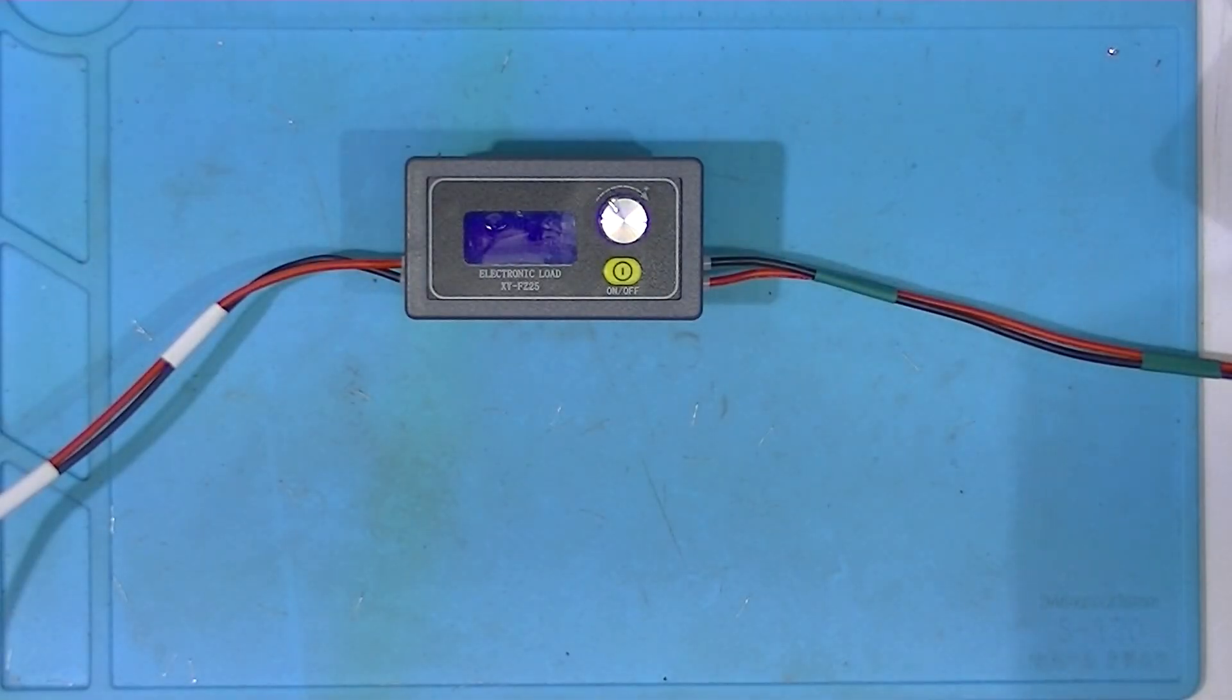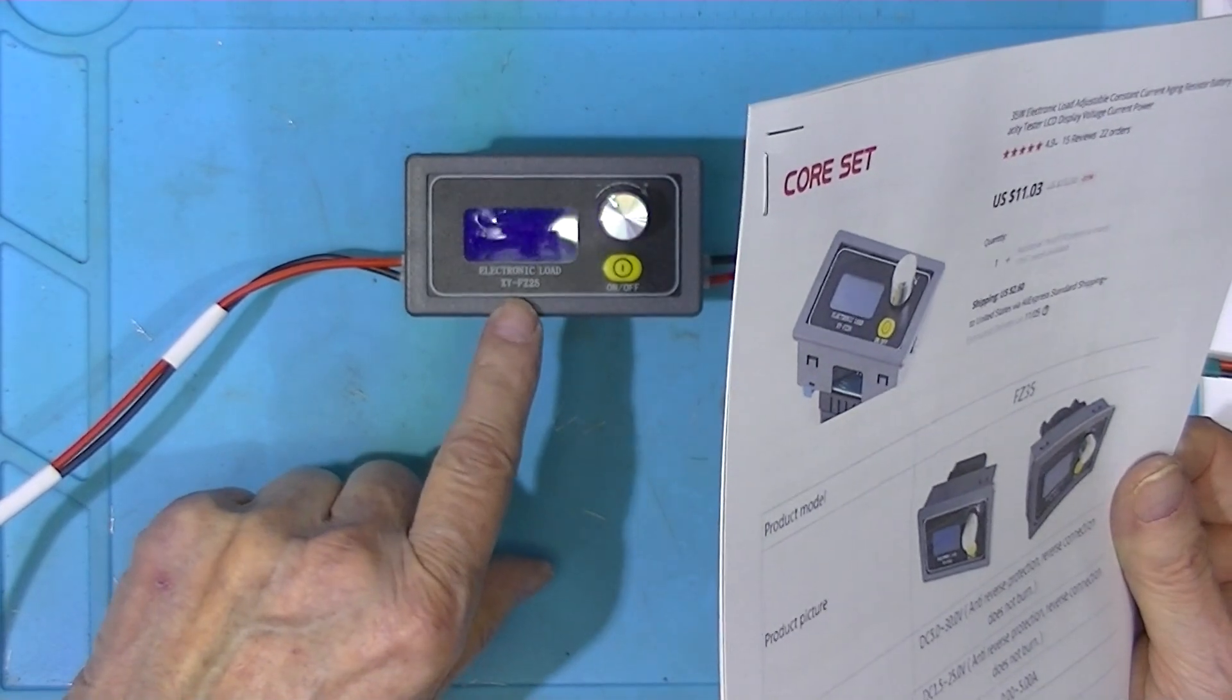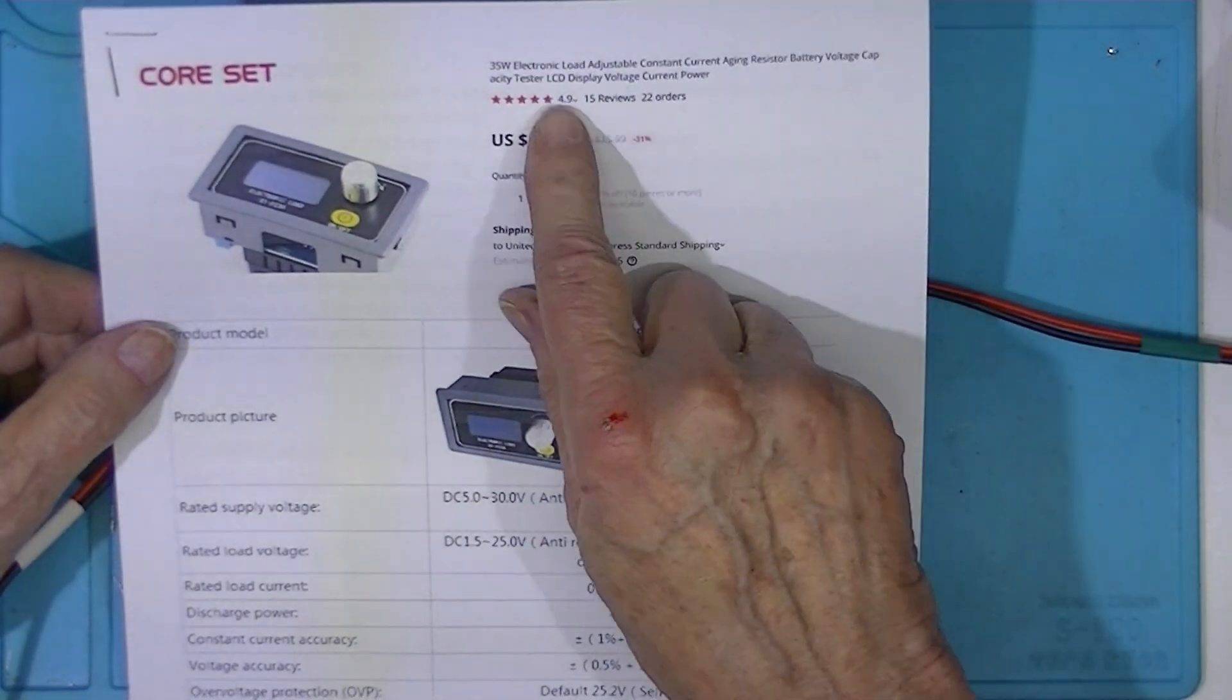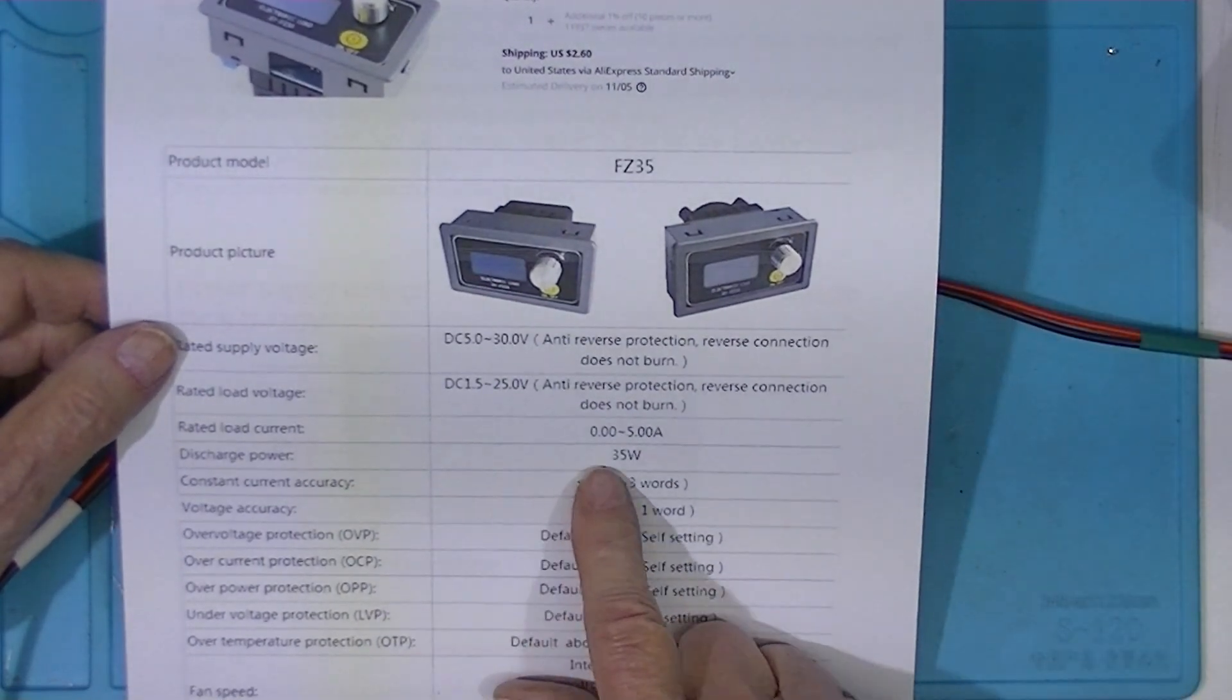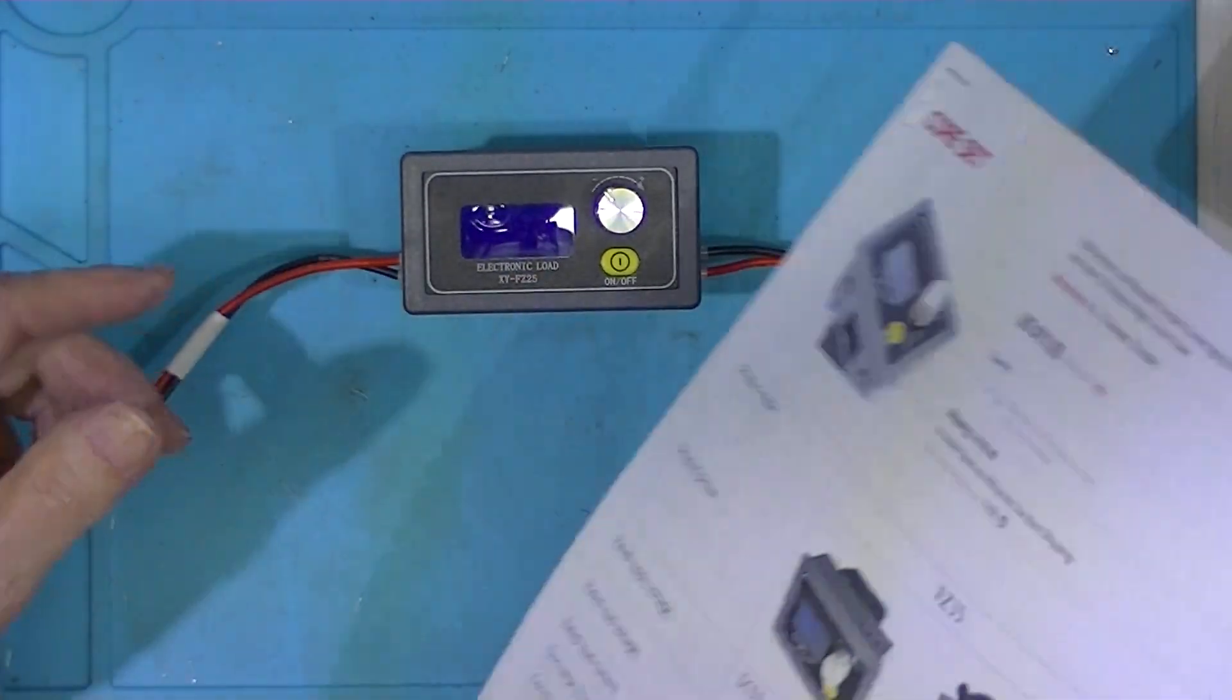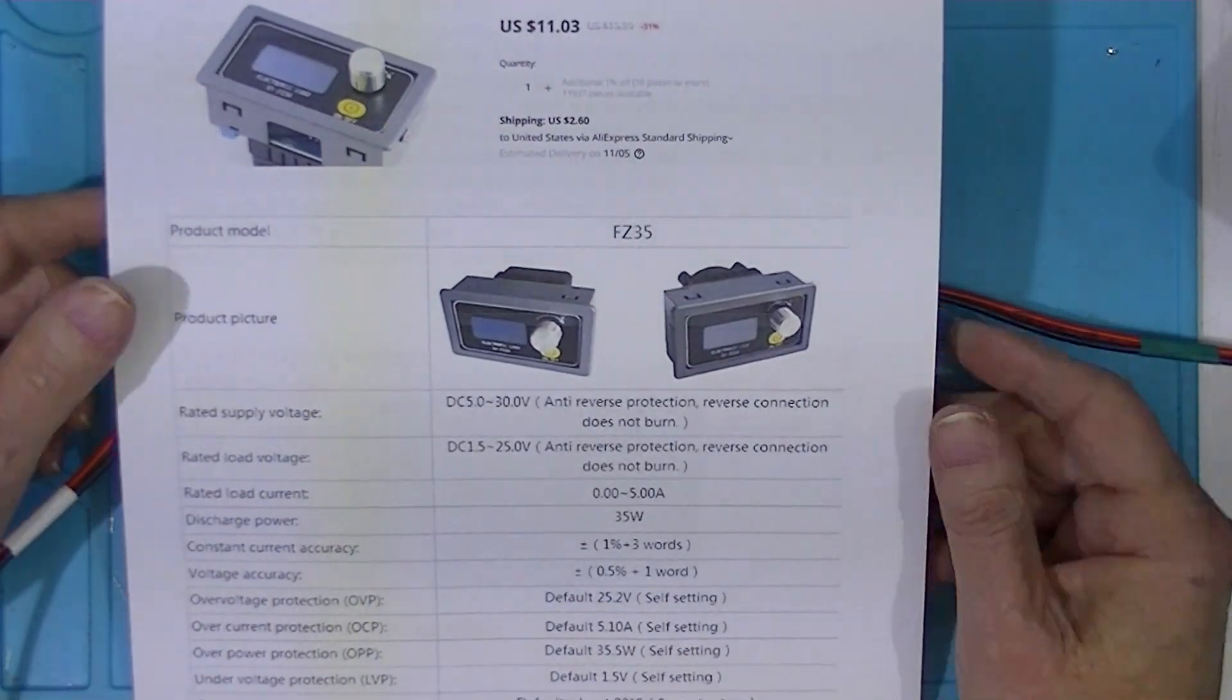I thought I could take a look at this little electronic load. It's an XY-FZ25. It was sold as a 35 watt electronic load, and the discharge power is listed as 35 watts. I'm not sure why this one is called an FZ25 when this one is called an FZ35. I'm not sure just what we're doing here.